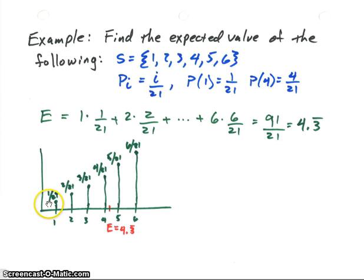Now looking at a plot of the values in the sample space and their line that indicates what their probability is, 1 has a probability of 1/21, 1 over 21, so I've got a little line here. 2 has a probability of 2 over 21, so it's twice as long, or should be twice as long, and so on. So I just keep drawing these lines longer and longer.